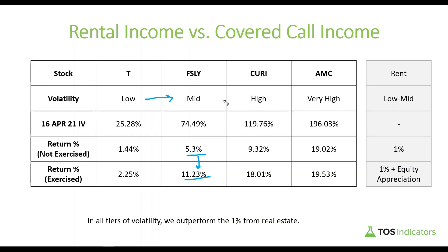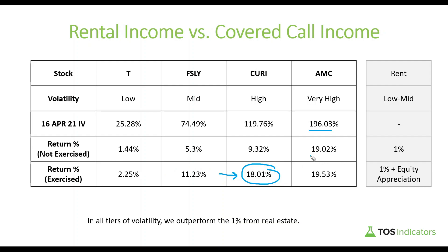Moving to the next tier, Curie is at an even higher level of volatility — implied volatility jumps from 74 percent to 119 percent. The return percentage also jumps up, so you're getting paid for that additional risk: from 5.3 percent up to 9.32 percent for that same 25 days, and if you do get exercised, that jumps up to 18 percent. Finally, comparing to AMC — where volatility is very high at 196 percent implied volatility — the return percentage for collecting just the premium on the at-the-money option is a whopping 19 percent, and if exercised it's only marginally better.